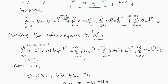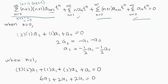When n = 0, considering the first, third, and fourth terms: (2)(1)·a₂ + (0+1)·a₁ + a₀ = 0, which gives 2a₂ + a₁ + a₀ = 0. Moving the highest coefficient to the left, we get a₂ = -½a₁ - ½a₀.